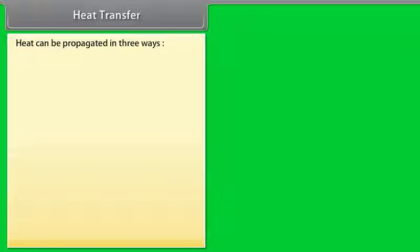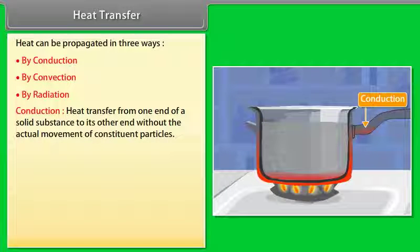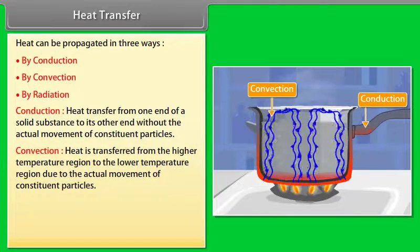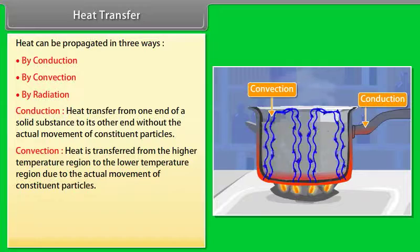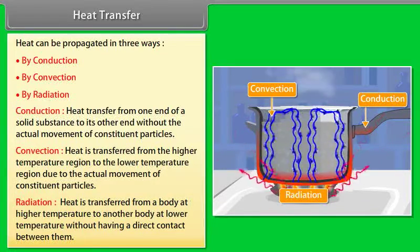Heat can be propagated in three ways: (1) Conduction — heat transfer from one end of a solid to the other without actual movement of particles; (2) Convection — heat transferred from higher to lower temperature regions due to actual movement of particles; (3) Radiation — heat transferred from a body at high temperature to one at lower temperature without direct contact between them.